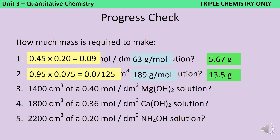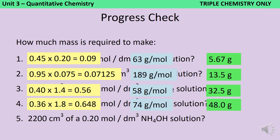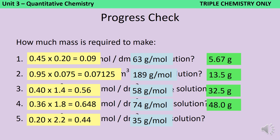In 1400 centimetres cubed of a 0.4 moles per decimetre cubed magnesium hydroxide solution, there are 0.56 moles; magnesium hydroxide has a relative formula mass of 58, so multiplying gives a mass of 32.5 grams. In the calcium hydroxide solution there are 0.648 moles, and each mole has a mass of 74, giving a total mass of 48 grams. Finally, in ammonium hydroxide there are 0.44 moles; ammonium hydroxide has a relative formula mass of 35 grams per mole, giving a final mass of 15.4 grams.